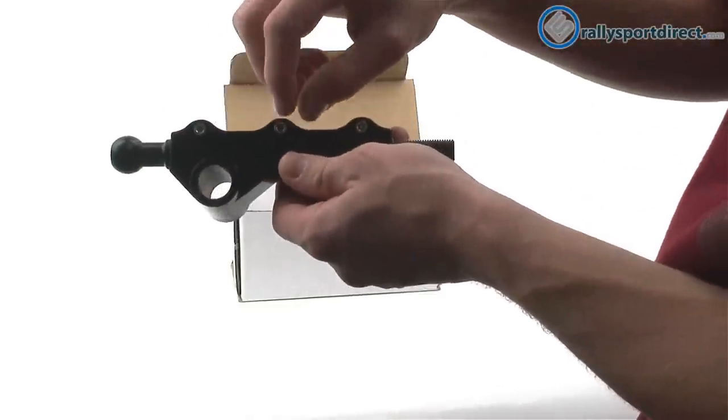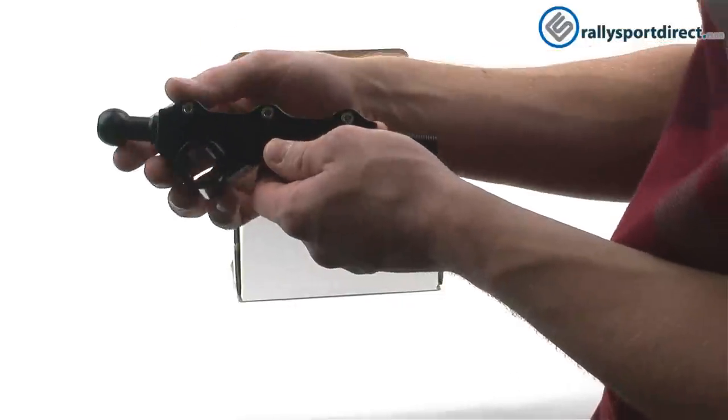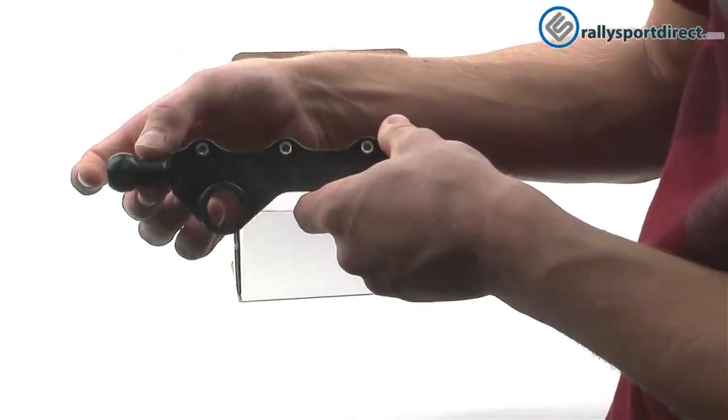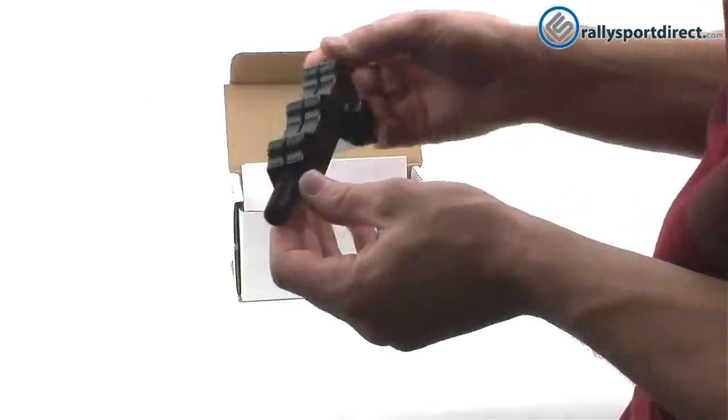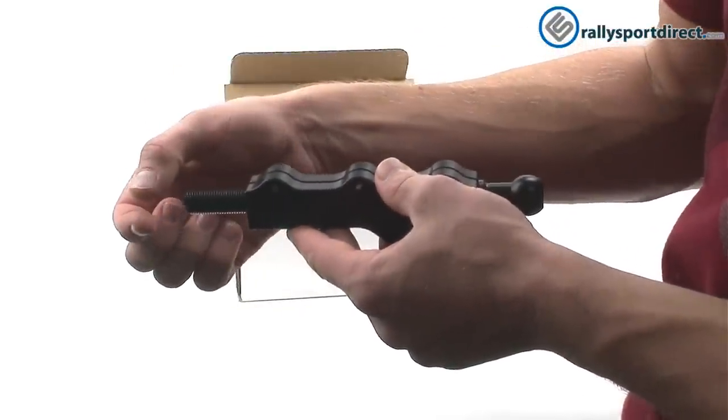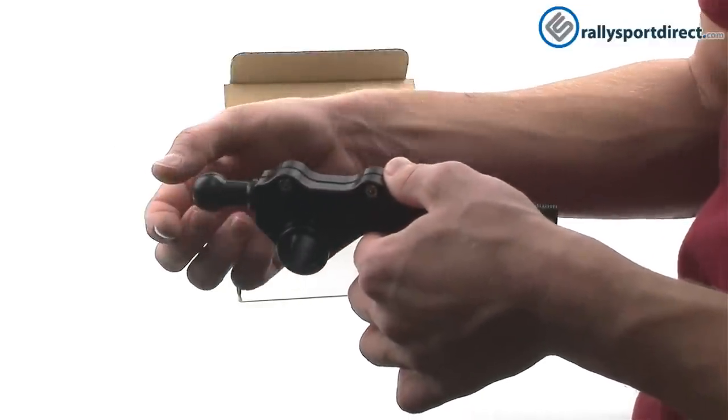How you adjust this is you loosen these, the rods will slide out. If you want to increase the height of the shifter, you'll slide this rod out. If you want to decrease the throw of the shifter, you'll slide this rod out.